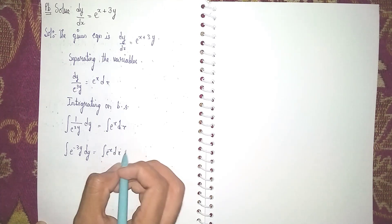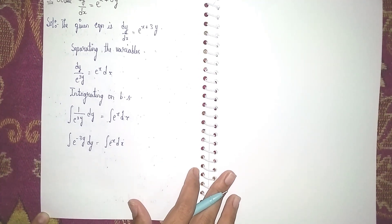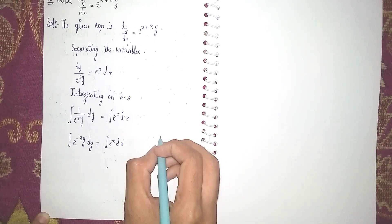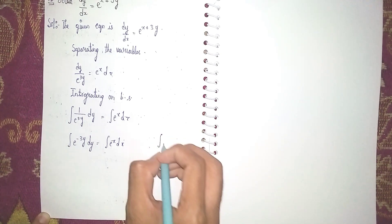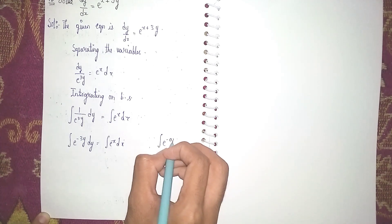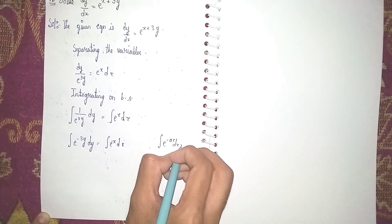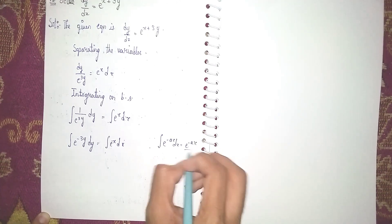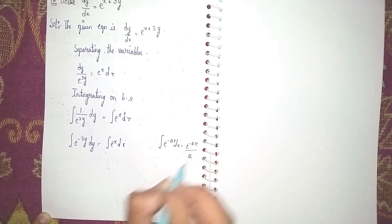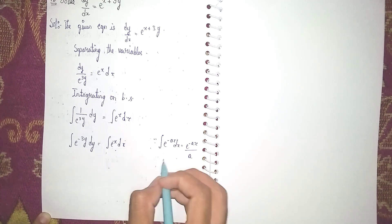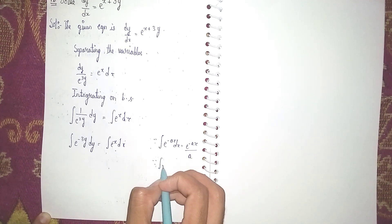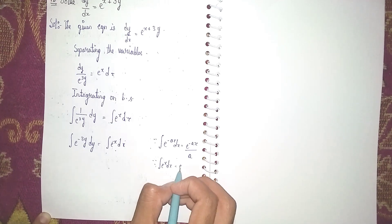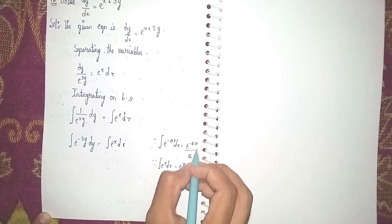The formula we are using is: integral of e^(-ax) dx = e^(-ax) / a. And the formula for the right side: integral of e^x dx = e^x + C.